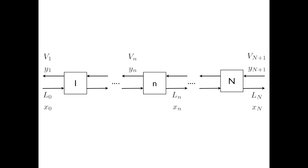In this case, Y_{N+1} is 0. At the top left, we have the final extract with flow V₁ and concentration Y₁, and at the bottom right, the final raffinate flow and composition.